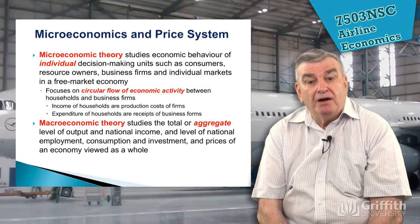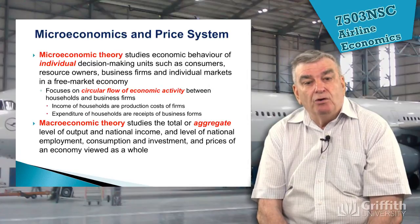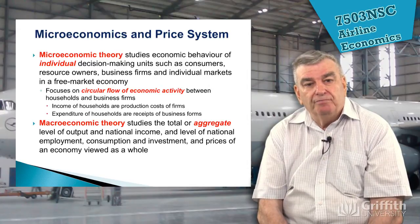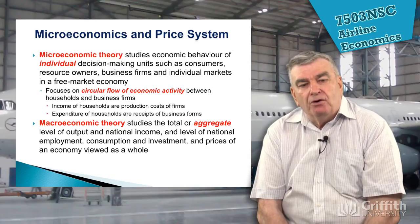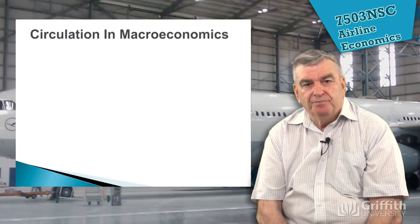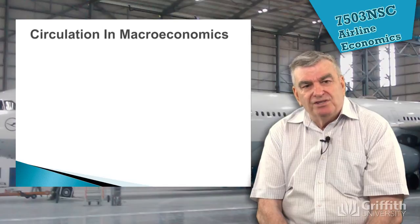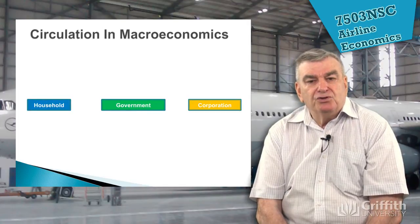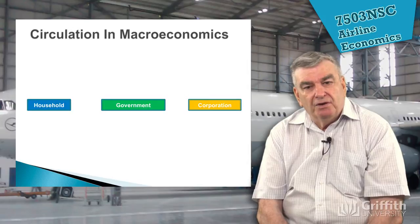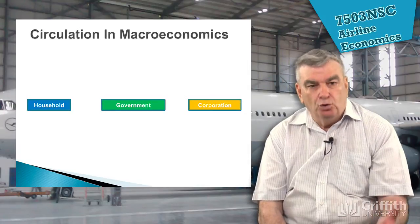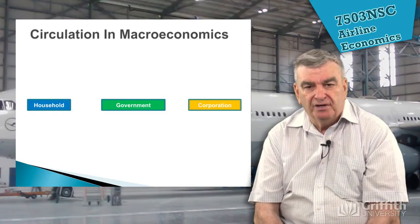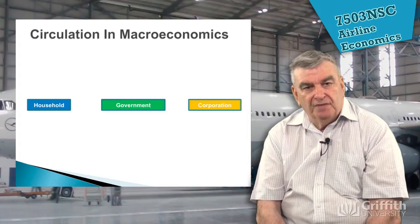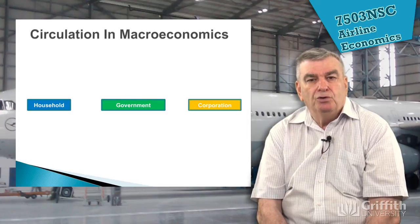We'll also look at macroeconomic theory, which studies the total or aggregate level of output — the big picture. Microeconomics looks at individual units; macroeconomics looks at the big picture. In a simple circular flow model, we have three major areas: the household — you're part of a household — the government, and the corporation, which can be any company we wish to think of.